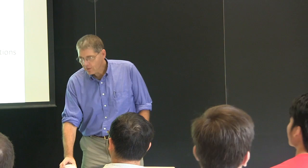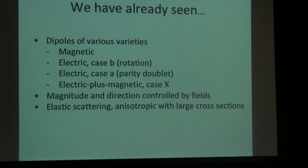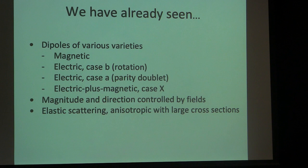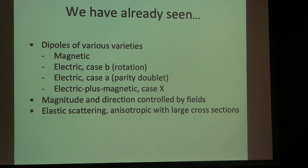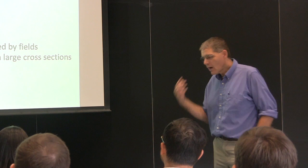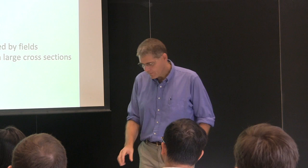As you will recall, those of you who were here on Tuesday, we talked about dipoles and how dipoles in real life are atoms or molecules made of stuff. This stuff can move around and affect what the dipole moments are. Because you can push on the stuff by putting them in different quantum mechanical states, by applying different electric or magnetic fields, you can change those dipoles. We saw magnetic, electric cases, the electric cross-magnetic case, and Hund's case X. We also looked at interactions between dipoles, elastic scattering cross-sections, which are anisotropic, with consequences for the equilibration of a non-equilibrium gas.